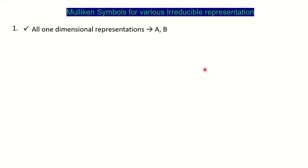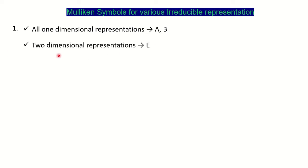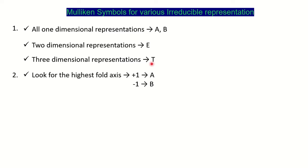So we'll see now what is Mulliken symbol and how we can find it for each irreducible representation. Some rules or postulates are there which you have to keep in mind. First, all one-dimensional representations in the character table — if it is one-dimensional, meaning represented by one — then the symbol will be given either A or B. For two-dimensional representation, meaning if you find two in the character table, the symbol is E. And for three-dimensional representation, if the number is three, the symbol is T.